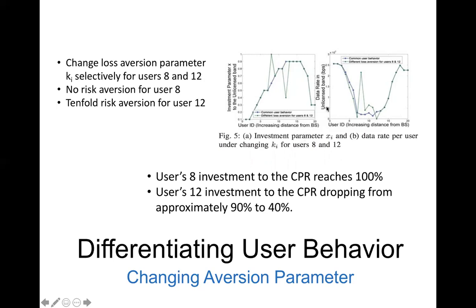The corresponding utility can be seen from the right side figure. Because of their risk choices, utility will increase or drop based on the overall situation. If the risk taking does not cause the CPR to collapse, then the user will gain higher utility. But if it causes the CPR to collapse, then the user will not get any utility out of this investment.